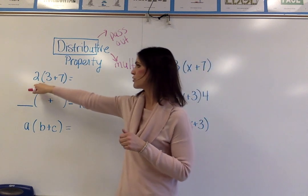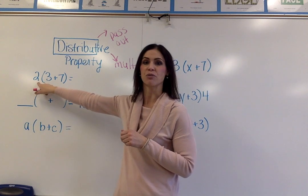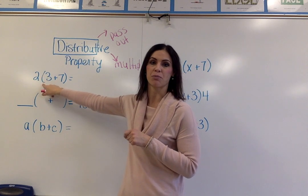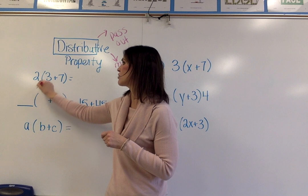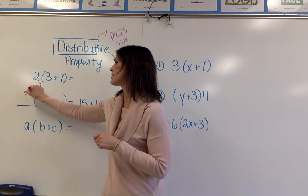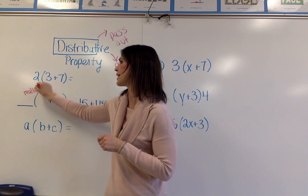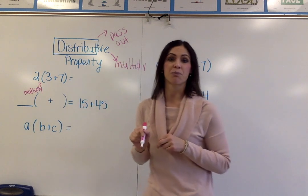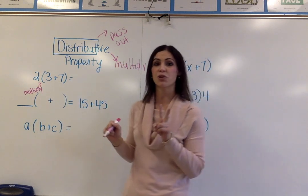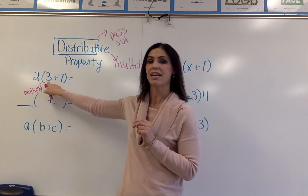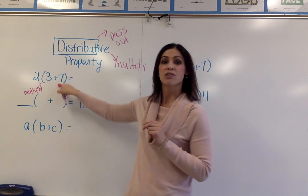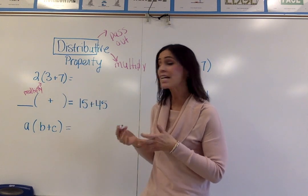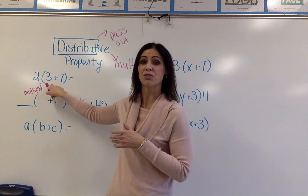So if you look at your sheet, you have two, and the two is written next to the parenthesis. Since the two is written next to the parenthesis here, that is telling you to multiply. Inside of the parenthesis, you have two terms. You have a 3 and a 7. So I have to multiply each of those numbers by 2.